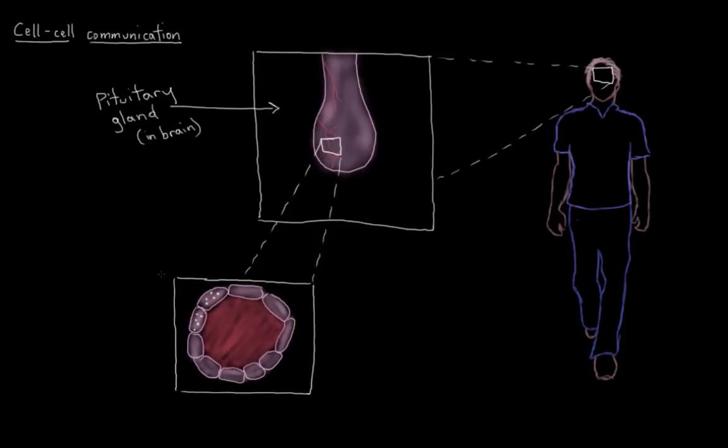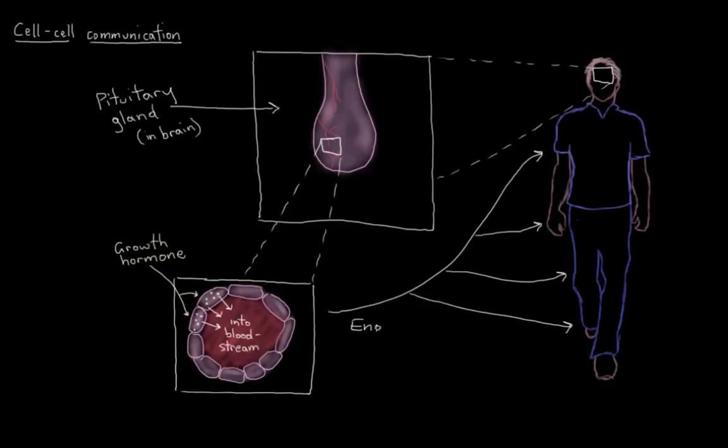So they'll create the growth hormone inside their cell bodies, and they'll release them into the bloodstream. And now our growth hormone can travel through the bloodstream and get to literally any place in the body. So every cell of your body has the opportunity to get this growth hormone message. It doesn't mean that every cell will necessarily respond to the message. Some cells just don't have the right proteins to bind certain hormones. But either way, you can see that this is a long distance form of communication.